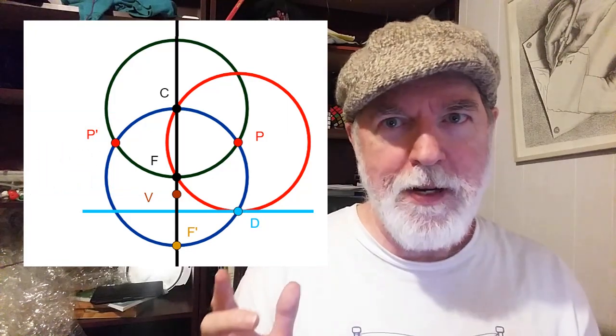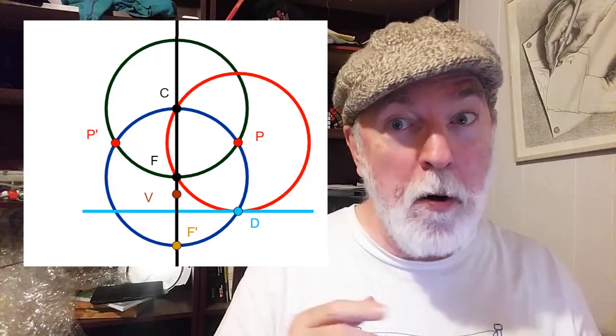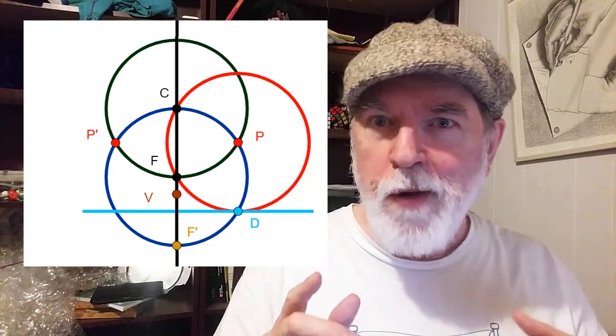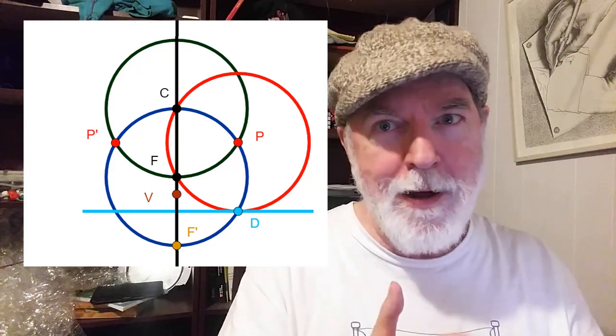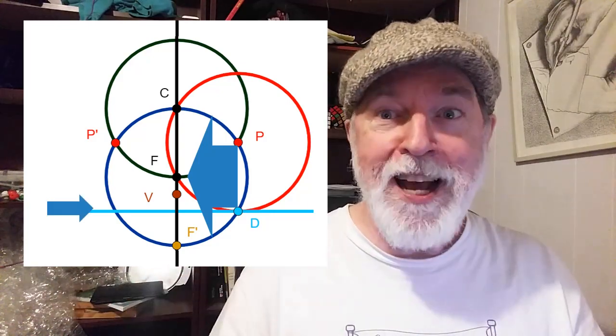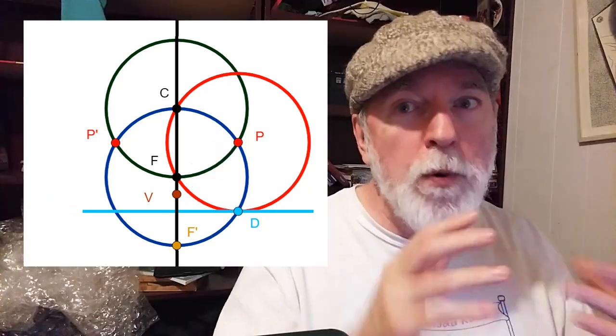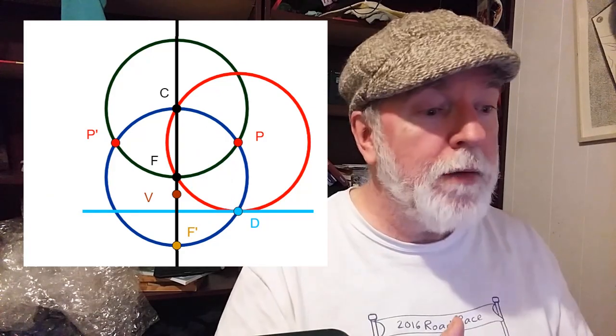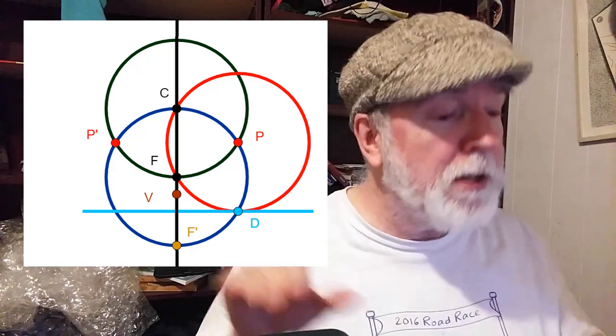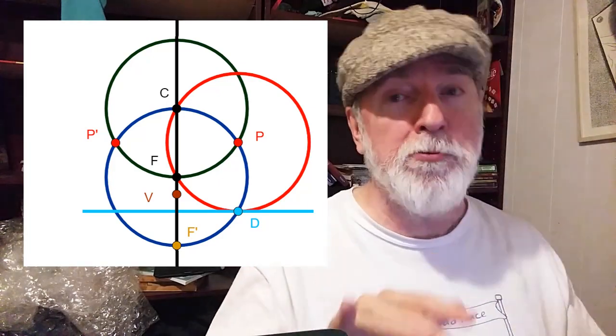A parabola is the set of all points that have the same distance from a focal point F and a certain straight line, which is called the directrix. Now we're going to draw a parabola with F as the focus, V as the vertex, and that horizontal line as the directrix.